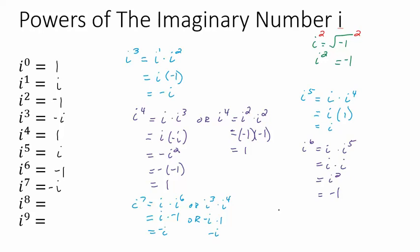For i to the eighth, I want to show another approach. You could write it as i to the second, to the fourth power — multiplying those exponents gives 8. We know i squared is negative 1, and negative 1 to the fourth power is 1. So i to the eighth is 1.